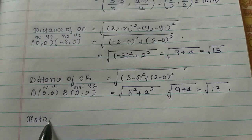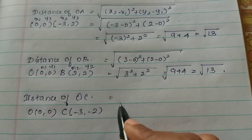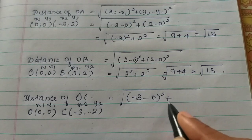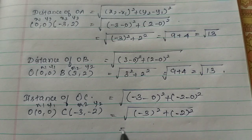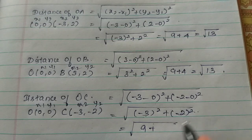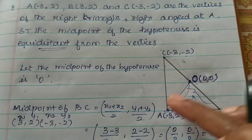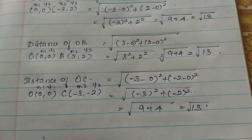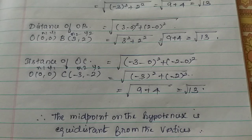Distance OC: O is (0,0) and C is (-3,-2). Using the distance formula: √[(-3-0)²+(-2-0)²] = √[(-3)²+(-2)²] = √[9+4] = √13. So all three distances are equal. Therefore, the midpoint of the hypotenuse is equidistant from all three vertices.